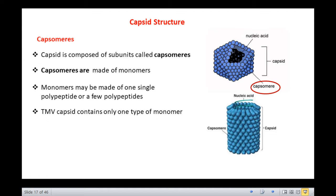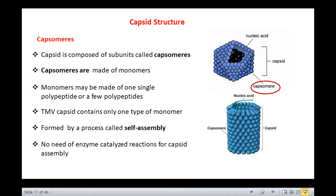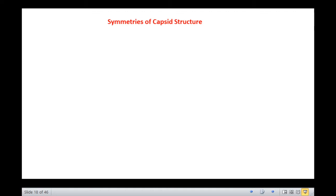This strategy is to take maximum advantage of the information stored in the small genetic material. Also, the capsid is formed all by itself by a process called self-assembly, so there is no need of any enzyme-catalyzed reaction for capsid assembly.